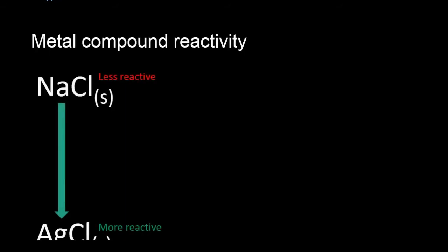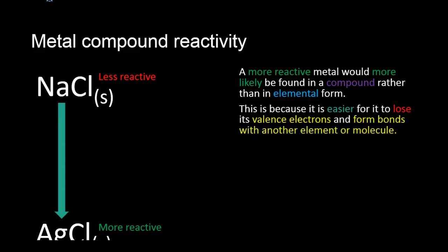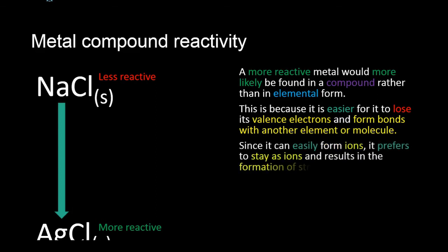Metal compound reactivity. A more reactive metal would more likely be found in a compound rather than in elemental form. This is because it is easier for it to lose its valence electrons than form bonds with another element or molecule. Since it can easily form ions, it prefers to stay as ions and results in the formation of strong bonds.